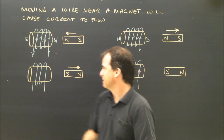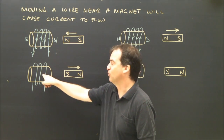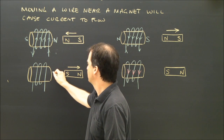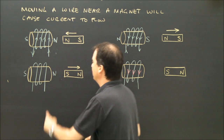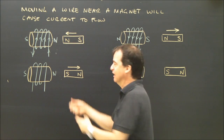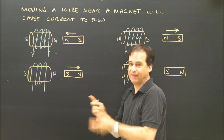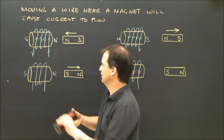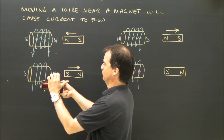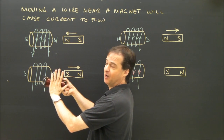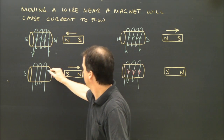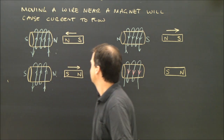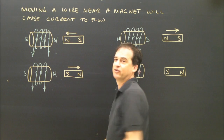Let's look at a third one. This is a south being pulled out of a coil. If a south is being pulled out, I need to make this end a north. The reason is that this north is trying to pull the south back in while I'm pulling the south out — that makes it difficult. So this end is north and the other is south. My thumb points to the right, my fingers go up, so the current flows that way.